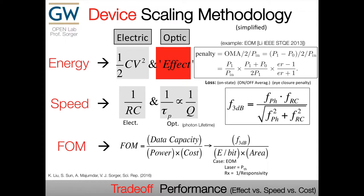The design rules for a modulator are: energy constraints and speed constraints. The FOM is essentially speed over energy times area. We have electrical constraints — CV² and 1/RC — and optical constraints as well. Optically, the switching performance breaks down into three components of optical power penalty: on-off state loss, on-off averaging loss (the average loss seen by the downstream photodetector), and DC static extinction ratio loss. All of them must be managed. They form a tradeoff — making the device smaller or using less voltage increases speed, but a lossier cavity also increases speed, so these three form a fundamental tradeoff.